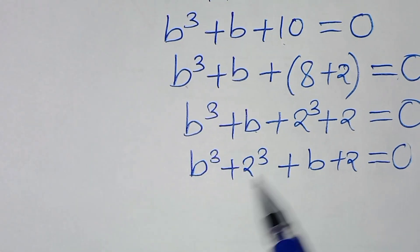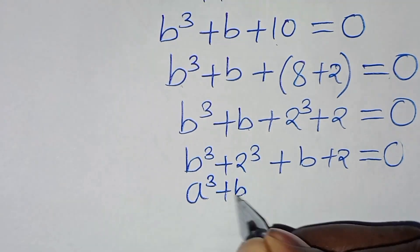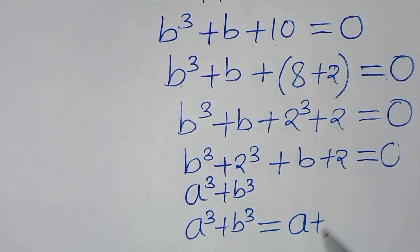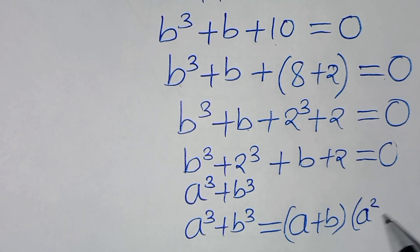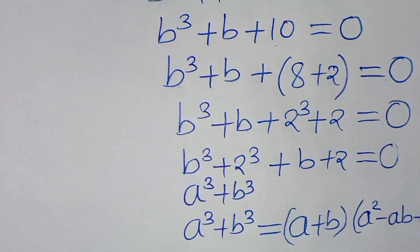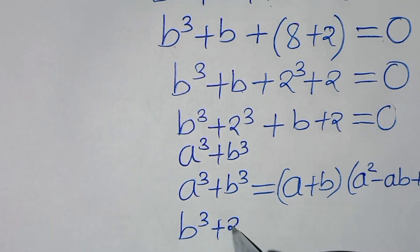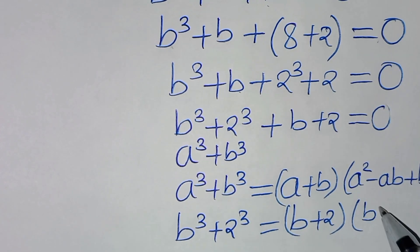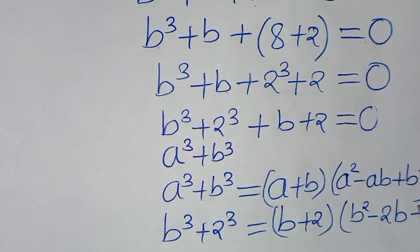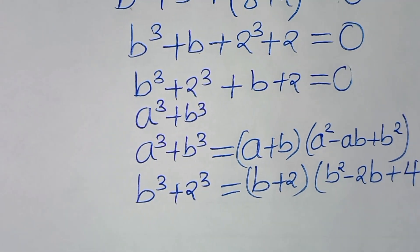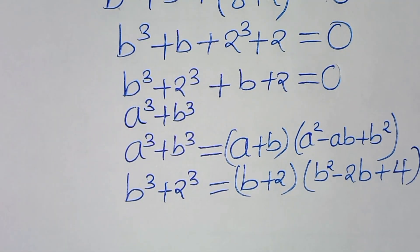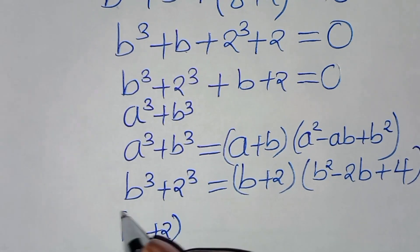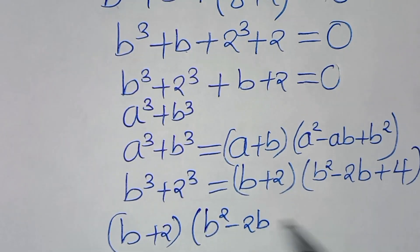Now, b to the power of 3 plus 2 to the power of 3 — using the sum of cubes formula a³ + b³ = (a + b)(a² − ab + b²) — this implies that b to the power of 3 plus 2 to the power of 3 is the same thing as (b + 2) times (b squared minus 2b plus 2 squared, which is 4).